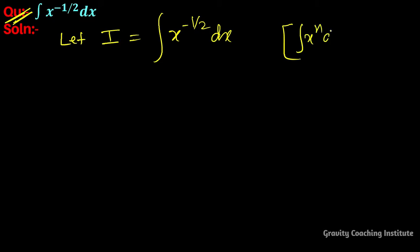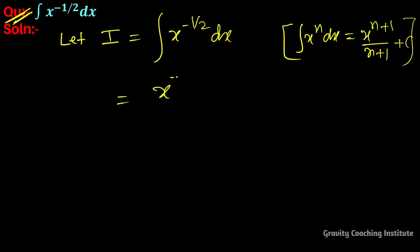Integration x to the power n dx equals x to the power n plus 1 upon n plus 1 plus c. So equal to x to the power minus 1 upon 2 plus 1 upon minus 1 upon 2 plus 1 plus c.